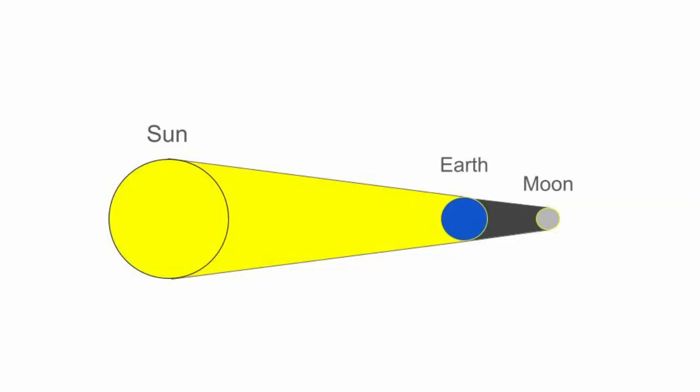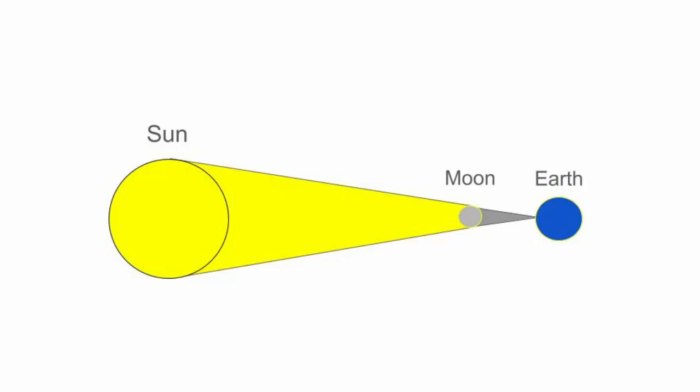Eclipses, both solar and lunar, are celestial phenomena that occur when one celestial body moves into the shadow of another. Lunar eclipses occur when the Earth moves between the Sun and the Moon, casting its shadow onto the Moon. Solar eclipses, on the other hand, occur when the Moon moves between the Earth and the Sun, casting its shadow onto the Earth.